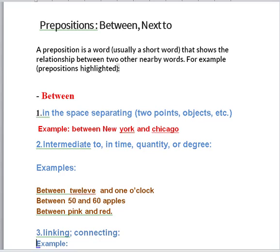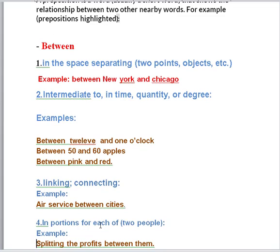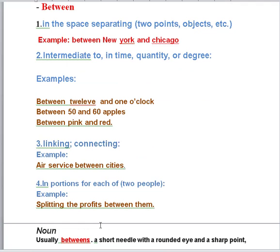Now we talk about 'between.' It has four main uses: one, in space separating two points — for example, between New York and Chicago. Two, intermediate in time, quality, or degree — for example, between three o'clock and one o'clock, between 50 and 60, between pink and red. Three, linking or connecting — for example, air service between cities. Four, in portions for each of two people — for example, splitting the profit between them.